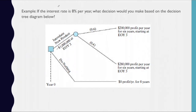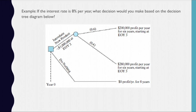Let's have an example. If the interest rate is 8% per year, what decision would you make based on the decision tree diagram below? This is the decision tree and it starts at year 0. At the beginning of the project, we have two choices. First is to introduce a new product which will cost the company $1,000,000 at the end of year 2.